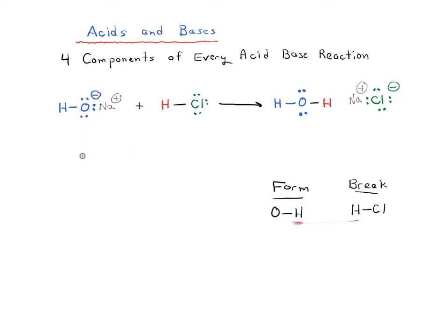This species over here, which is going to be forming a bond to hydrogen — the proton acceptor — is what we call the base. The base is the proton acceptor, and that's where the O-H bond is forming. Now where the H-Cl bond is breaking, the hydrogen is breaking a bond, a proton is being donated — this is what we call the acid.